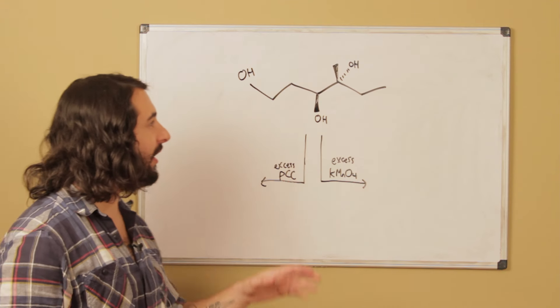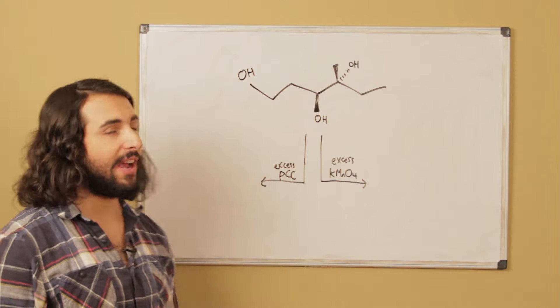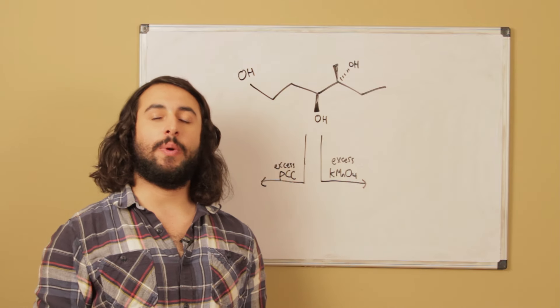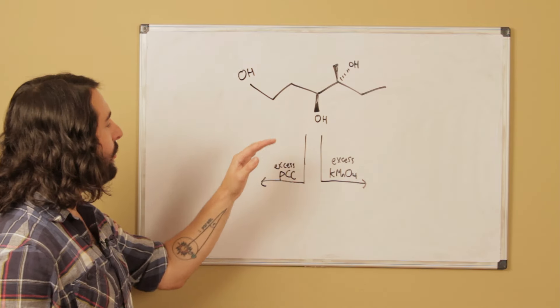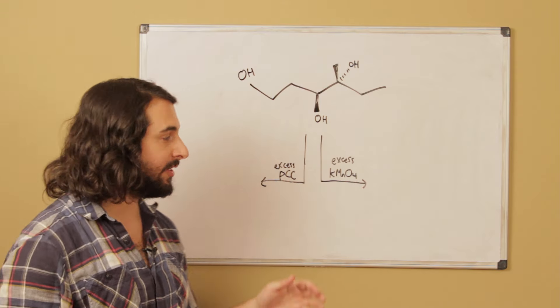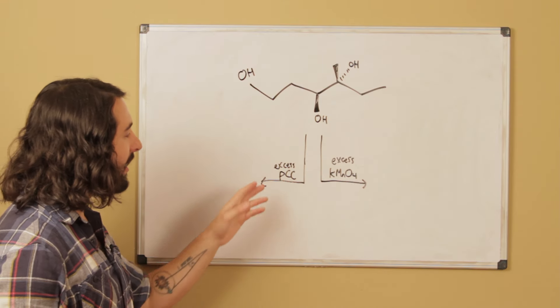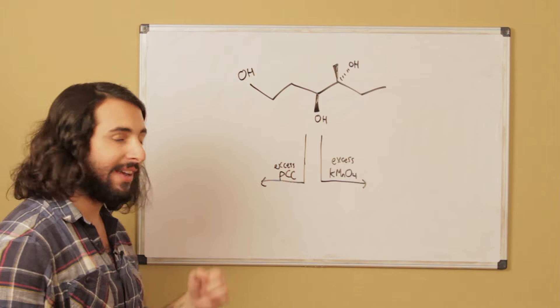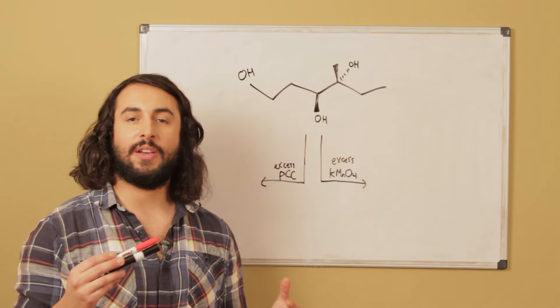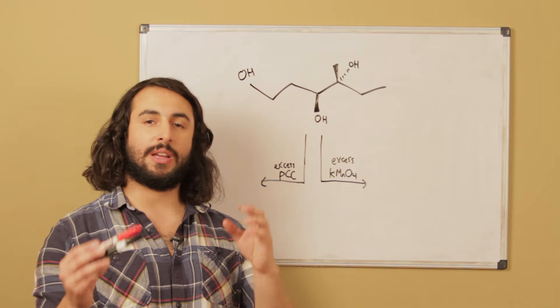Okay, so let's look at this compound right here. We've got a compound with several hydroxyl groups on it, and now we are going to see what happens when we use two different oxidizing agents. So we have PCC in excess and KMNO4 in excess.